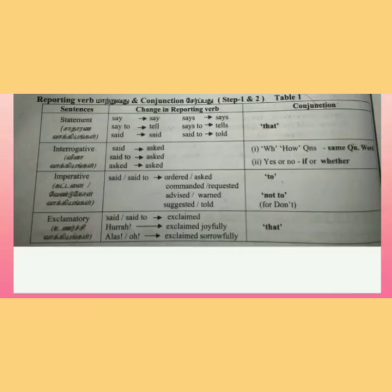See the table here. There are four types of sentences: statement, interrogative, imperative, and exclamatory. If 'say' appears in direct speech, it changes to 'say' in indirect; 'say to' means 'tell'; 'said' remains 'said'; 'says' stays 'says'; 'says to' becomes 'tell'; and 'said to' becomes 'told.' The conjunction 'that' is used in indirect speech.